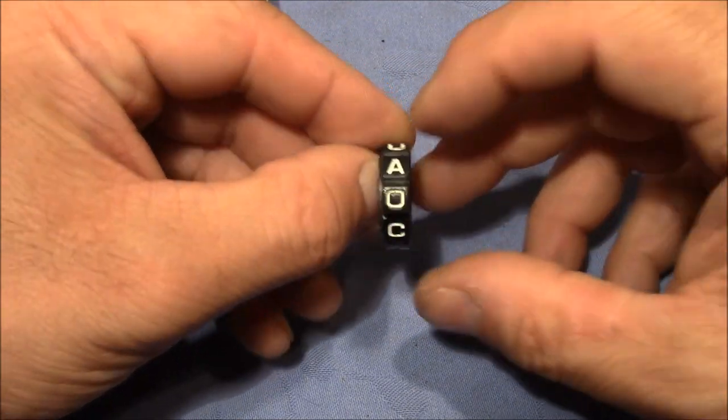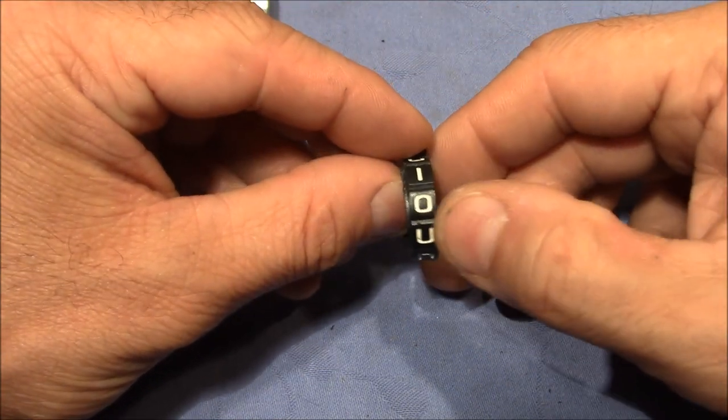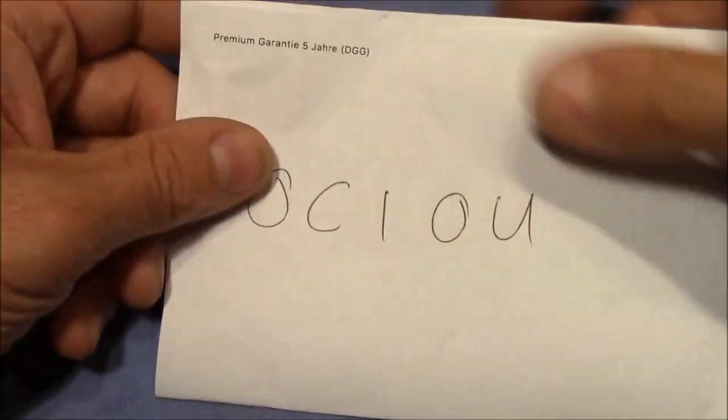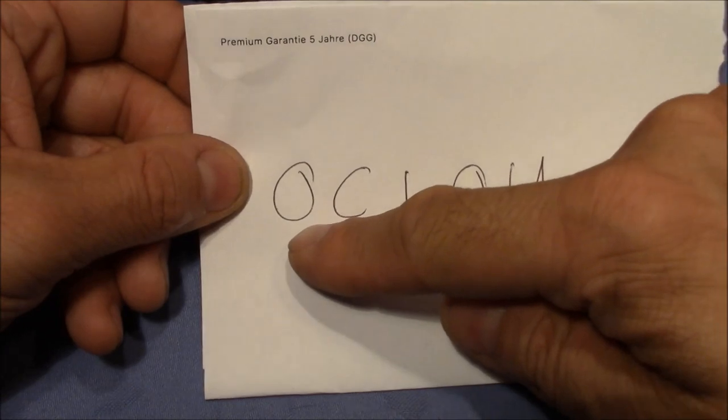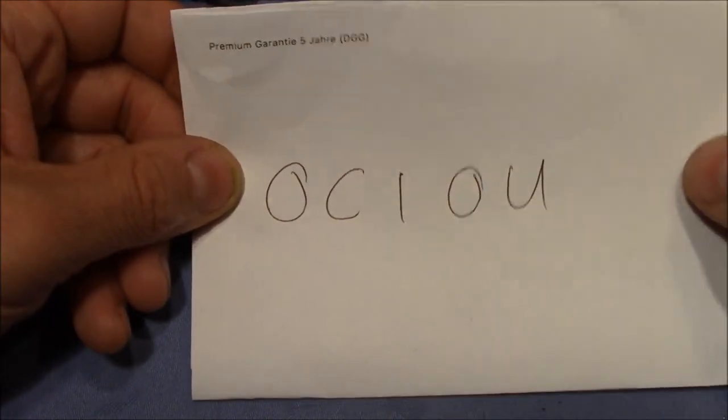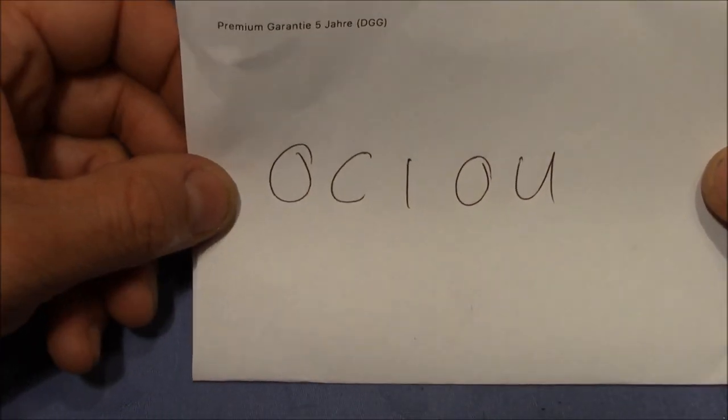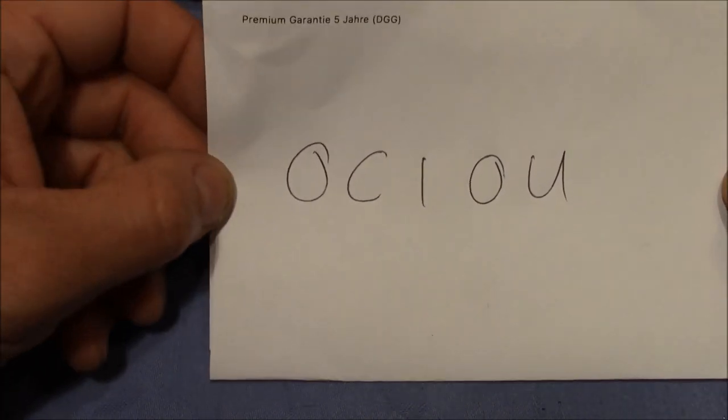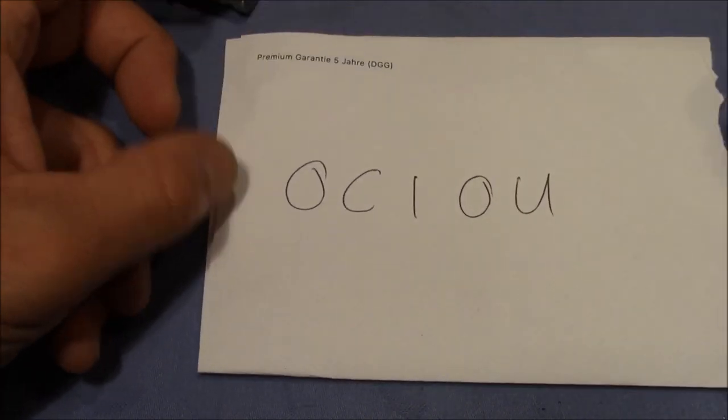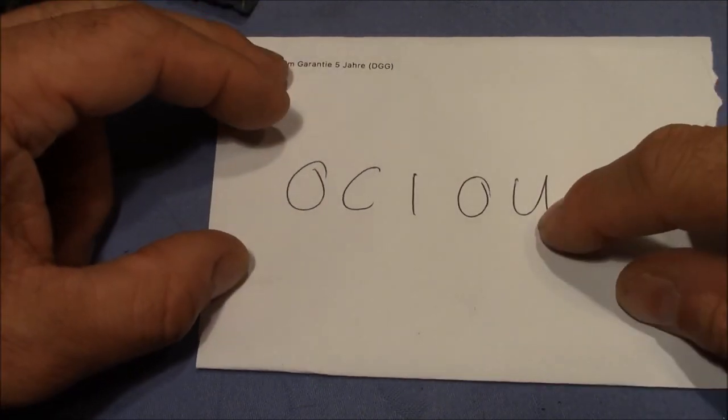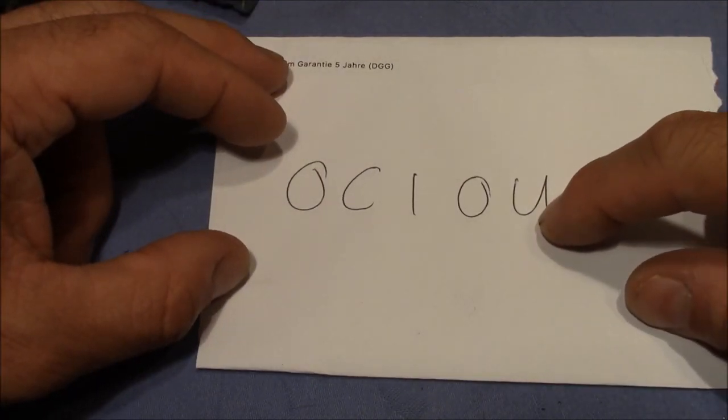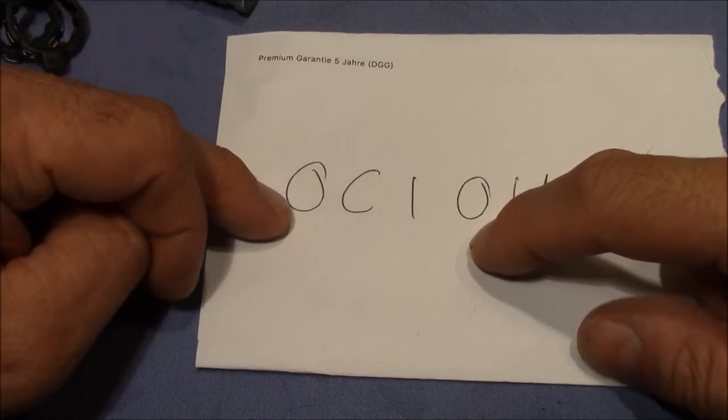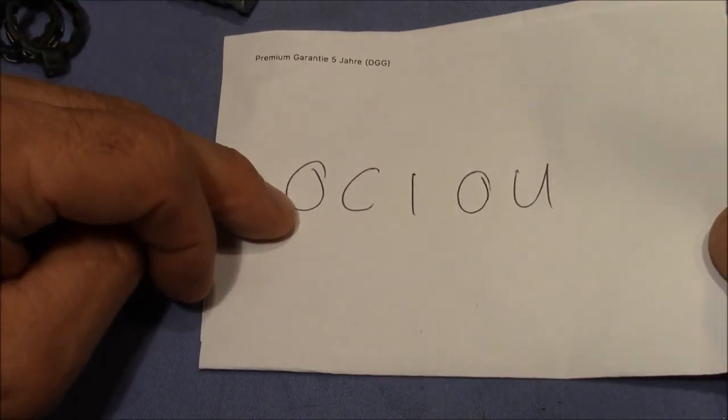So that means that when you write down the code like this, it was O-C-I-O-U. This is actually not unique. It can open the lock, but it's not guaranteed to open the lock because there are two positions where you find a U, two positions of the O and also here two positions of the O. So pretty interesting.